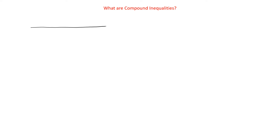So if we have our number line where we had our inequalities, like we graphed them, we have zero, negative three over here, and two over here. We could have the inequality we saw last time — this would be x is less than negative three. Notice it's not less than or equal to because the dot is open. So x is less than negative three. We could have another one over here — I'm going to make this one a closed dot. It doesn't matter if it's open or closed; they could both be open, both closed, or one of each.